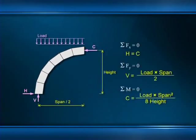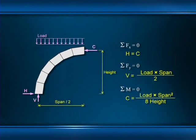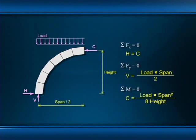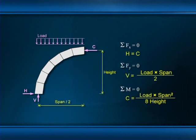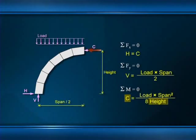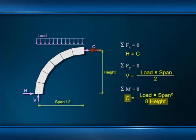When we solve the equilibrium equations, we get exactly the same results as for the cable, except now we're calculating compressive force in the arch rather than tension in the cable. The most important conclusion: the horizontal thrust of an arch is inversely proportional to its height. A taller arch produces less thrust than a flatter arch — a relationship that will be critically important when we compare semicircular Roman arches with the pointed Gothic arches of the medieval era in lecture 12.